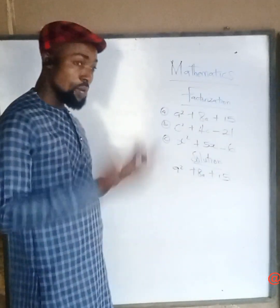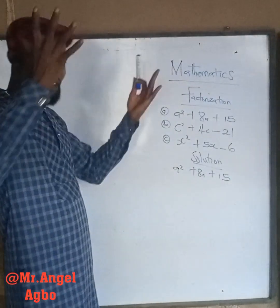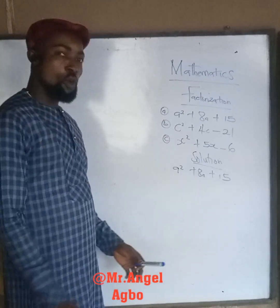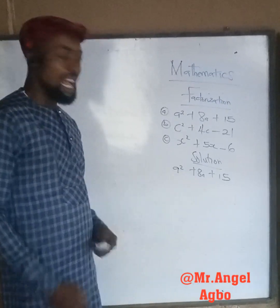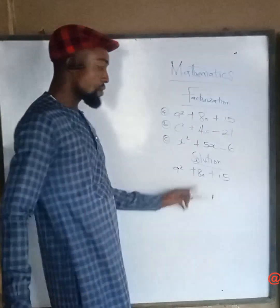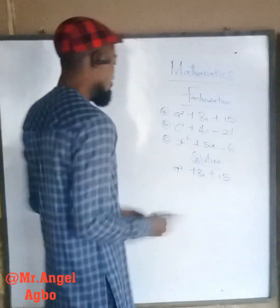So without wasting our time, thinking very fast, we know that the answer is 3 and 5. Because 3 plus 5 gives 8, and 3 times 5 gives 15.